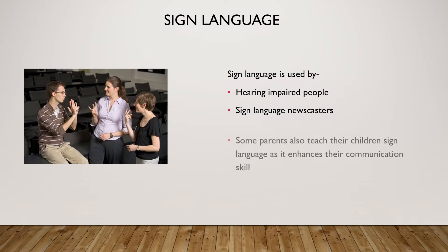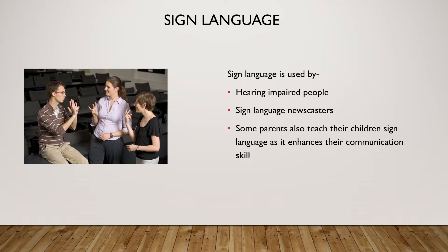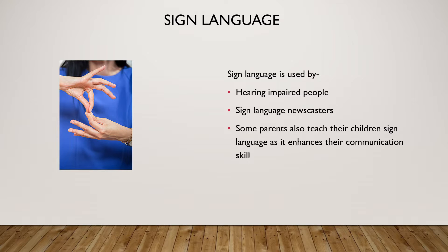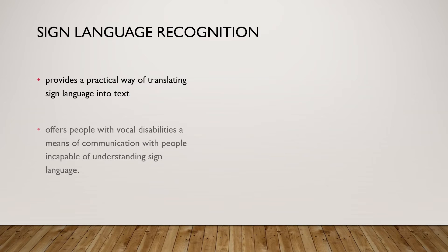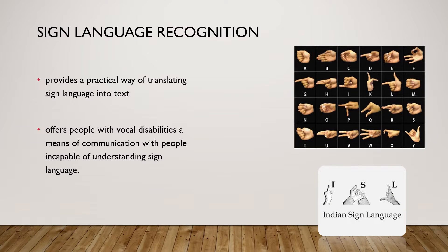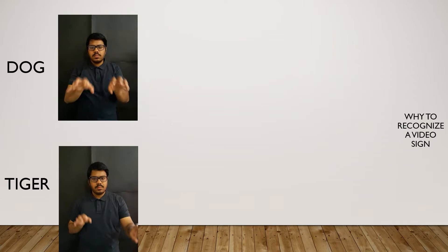Hearing impaired people use sign language as their prime means of communication. Developing a tool for interpreting sign language into text enables hearing people to understand hearing impaired persons. Designing a sign language recognition system provides a practical way of translating sign language into text, and also offers people with vocal disabilities a means of communication with others.